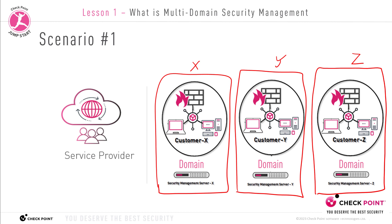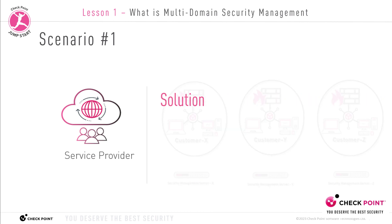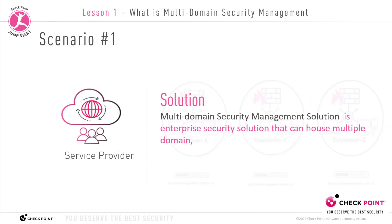We cannot use one Security Management Server to manage all three customers, because each customer would be able to view all the other customers' network topologies. For security reasons, each customer should only be able to view their own domain and only their own data. Another solution is to use the Multi-Domain Security Management Server — an enterprise management security solution that can house multiple customers, multiple tenants, and multiple domains on one system.